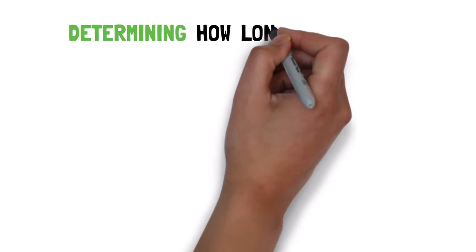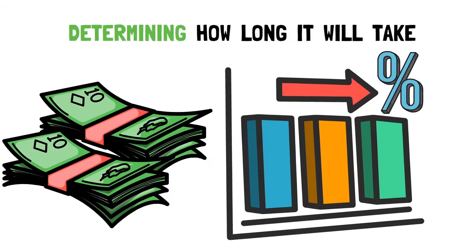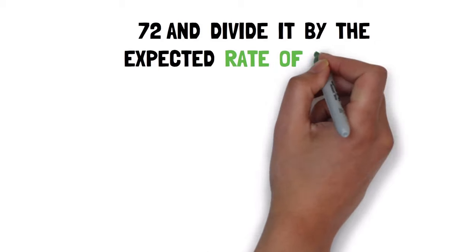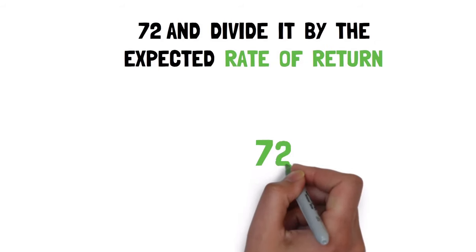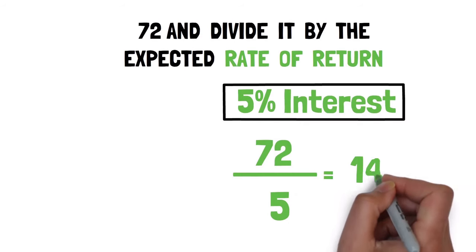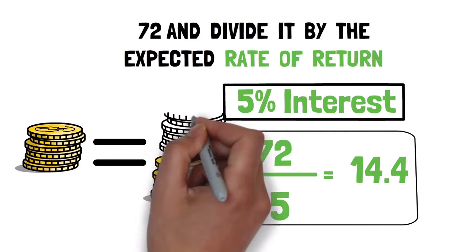The way it works is by determining how long it will take for an investment to double while receiving a fixed interest rate. Here's how you do it: take 72 and divide it by the expected rate of return. Divide 72 by 5, for example, if you intend to earn 5% interest. This gives you a total of 14.4. This is how long it will take you to double your money.